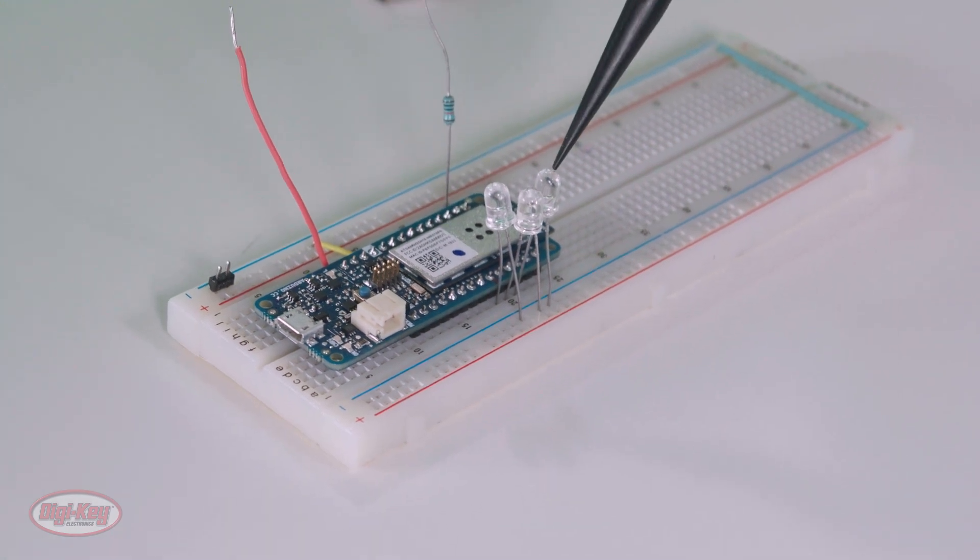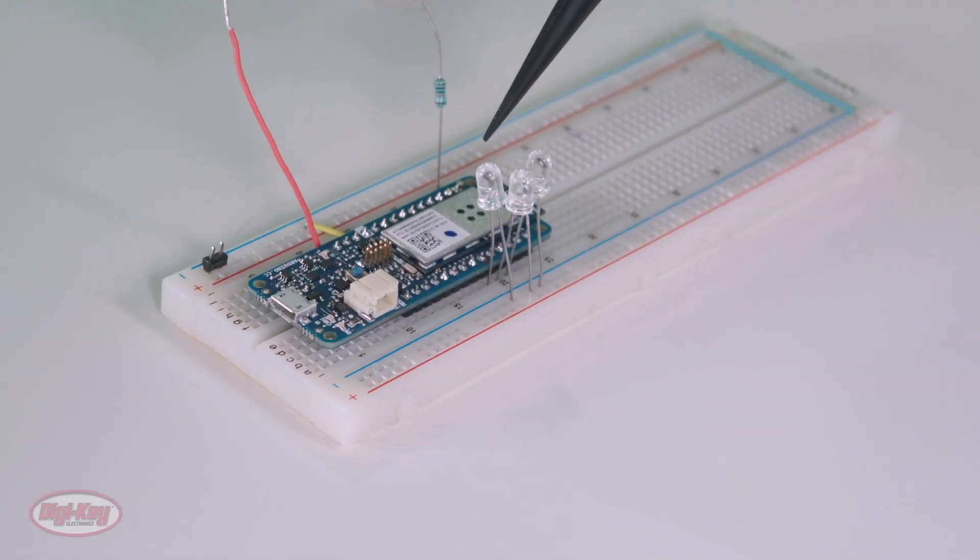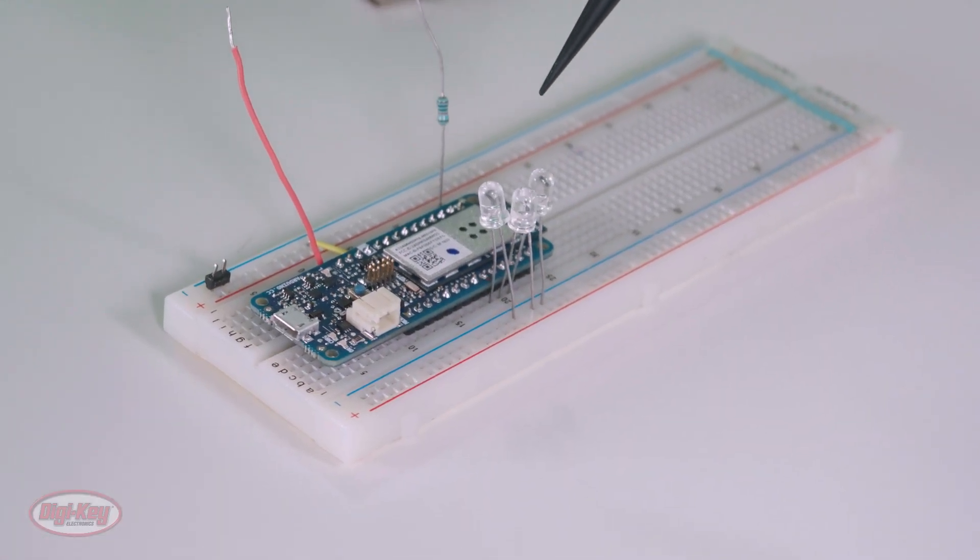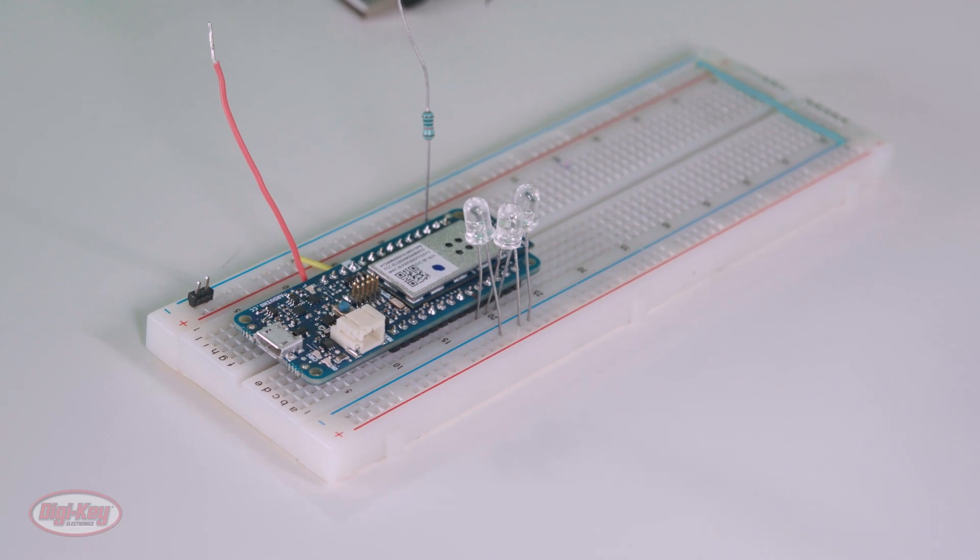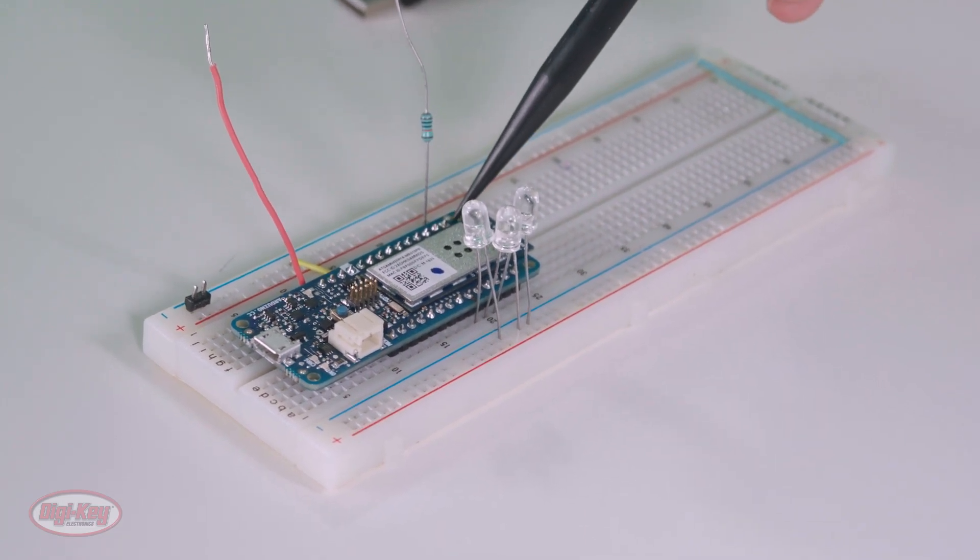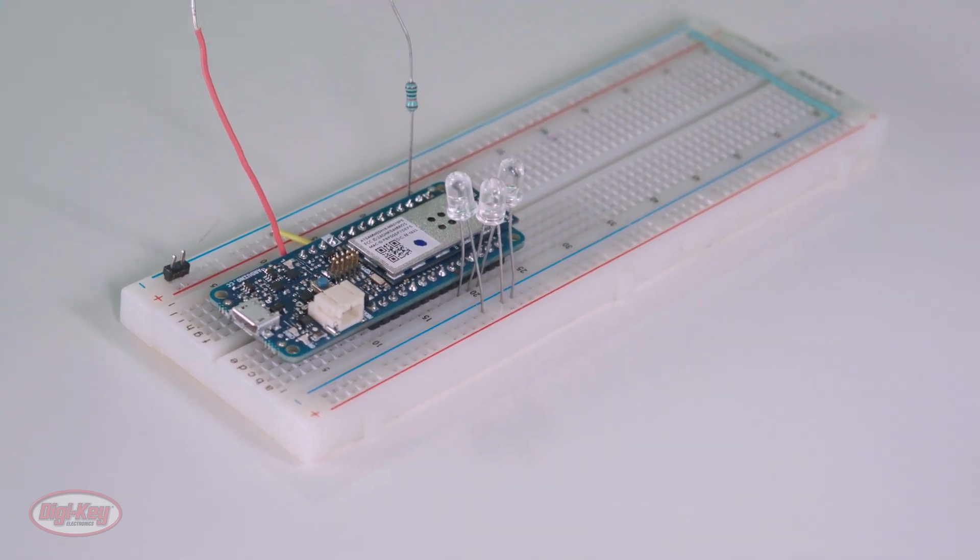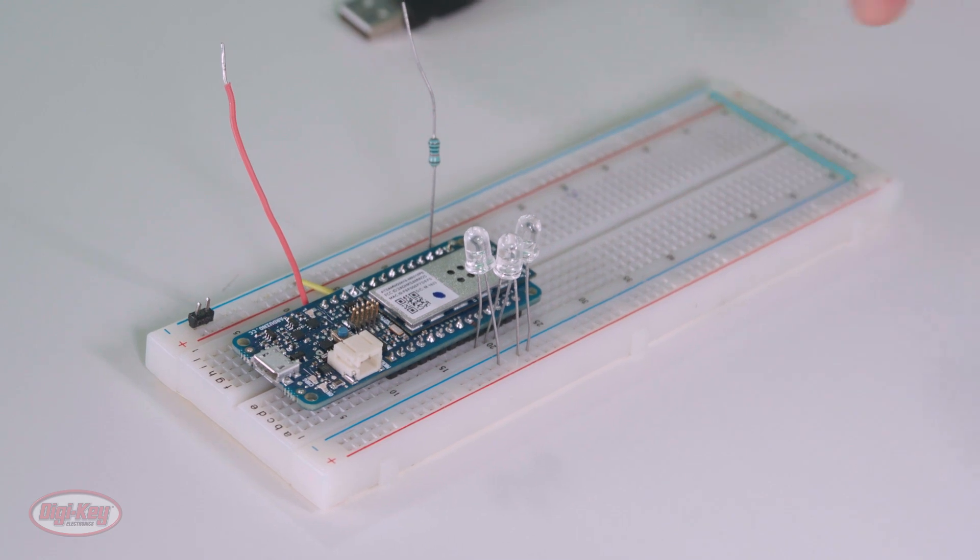I have three LEDs connected to the board. These are connected to the digital I/O pin 0, pin 1, and pin 2. And then I have a resistor connected to pin 6, digital I/O pin 6. And then this is power. I'll go into a little bit more detail during the demo, but I just want to go over the setup.